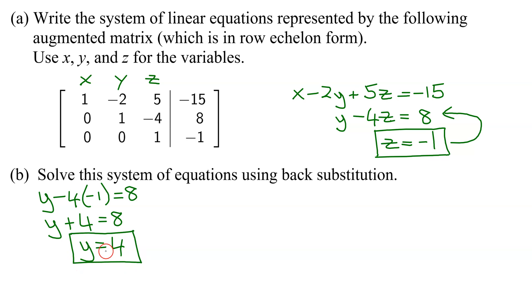Now we take these two values and back substitute up into the first equation. So I'm going to get x minus 2 times y, so it's minus 2 times 4, plus 5 times z, and z is negative 1, so it's plus 5 times negative 1 equals negative 15.